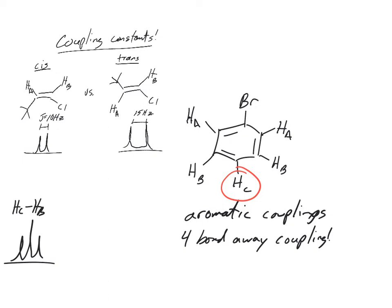So what this looks like is going to be a triplet of triplets. So HC was turned into a triplet by HB, and that coupling constant, that distance, was like 8 hertz. HA is going to split HC but in a much smaller way, like 3 hertz.